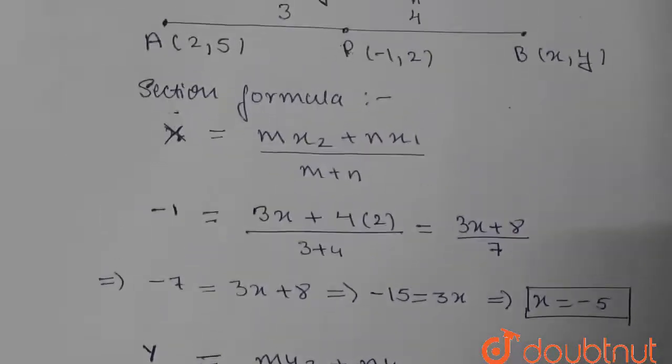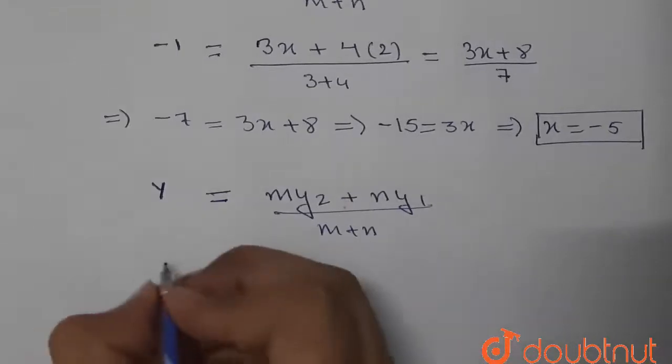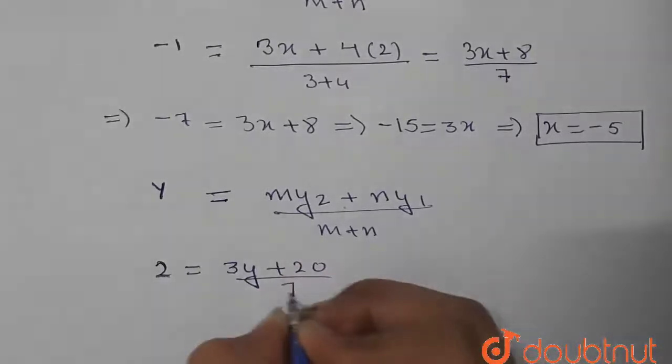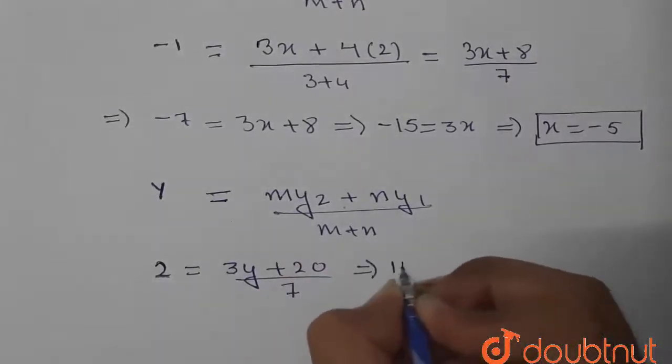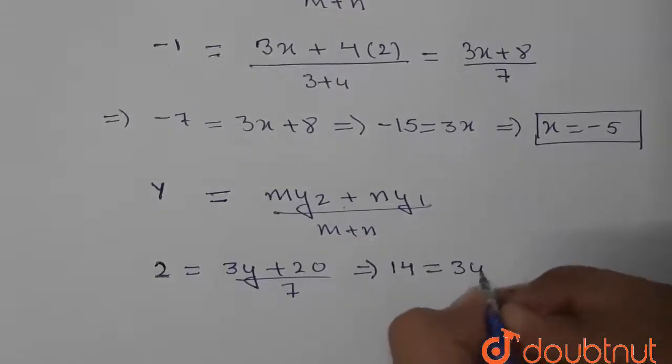Here y₂ is 2, so we will put the values. That will be 2 = (3y + 20)/7. This implies 14 = 3y + 20.